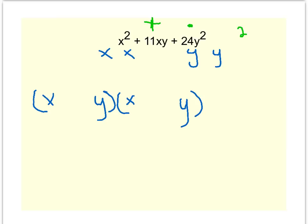24 could be 24 times 1. What else could it be? 12 times 2, 8 times 3, 6 times 4. 24 has a lot of different factors. Well, which one will help me add up to a positive 11? The positive 8 and the positive 3.